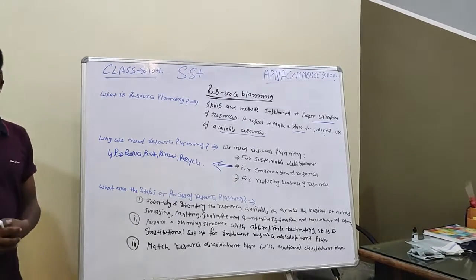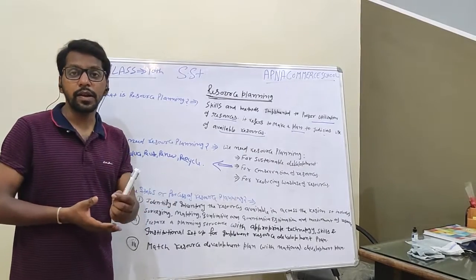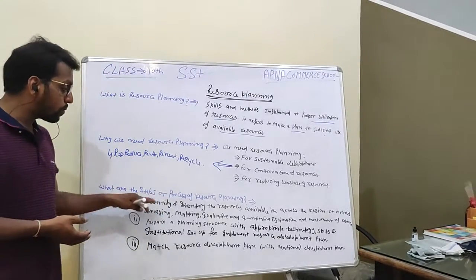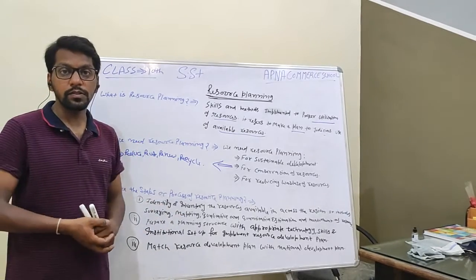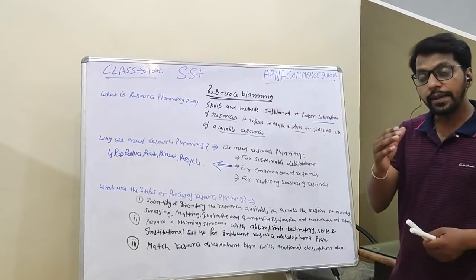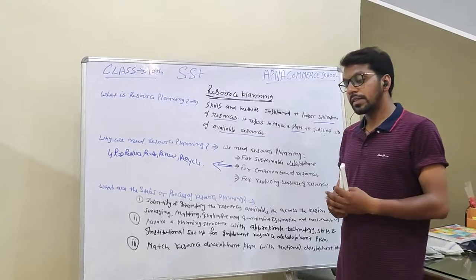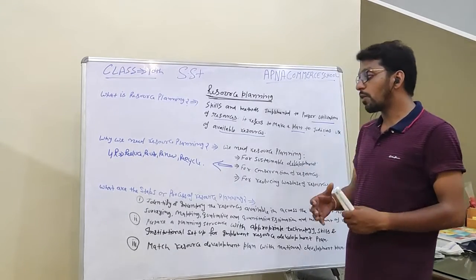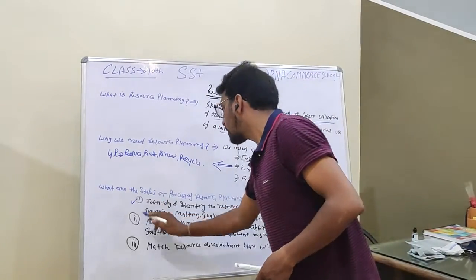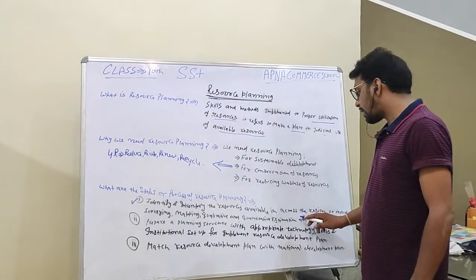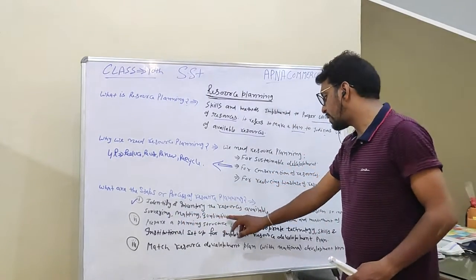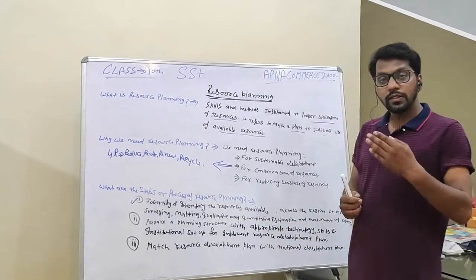Now, what are the steps for the process of resource planning? The first step of resource planning is to identify and inventory the resources. It includes surveying, mapping, qualitative and quantitative distribution and measurement of resources.